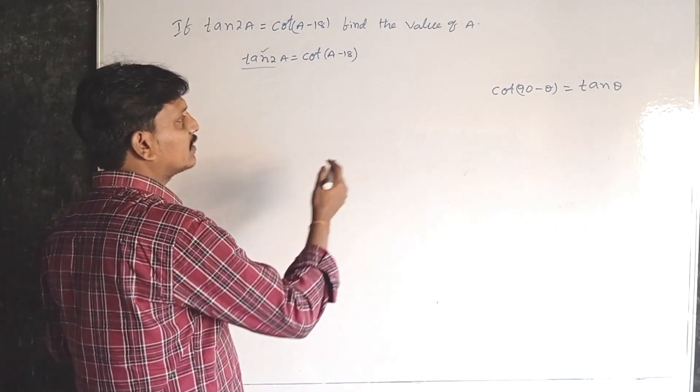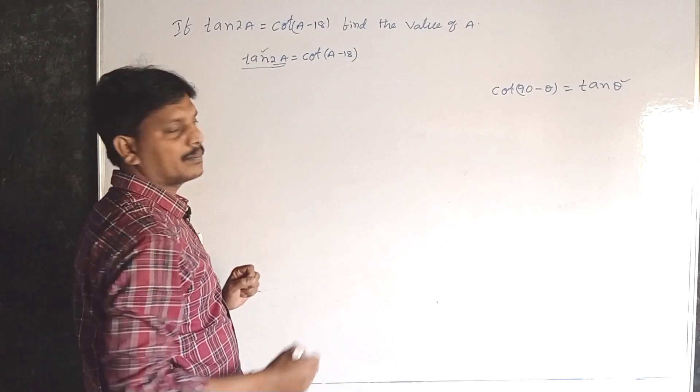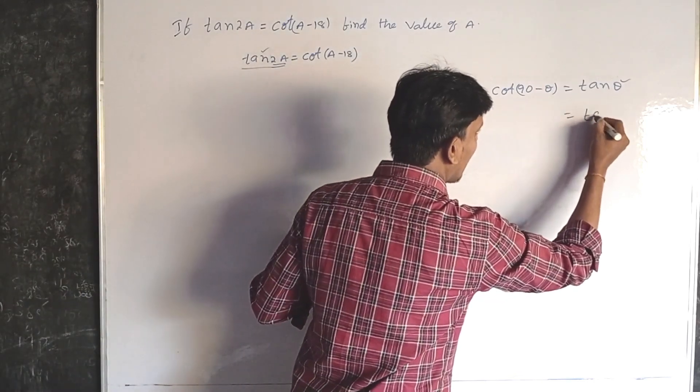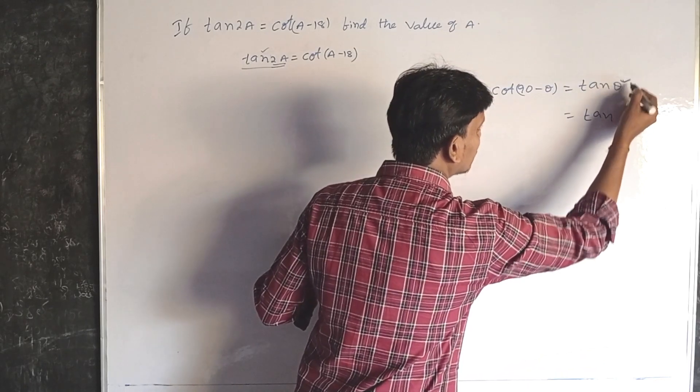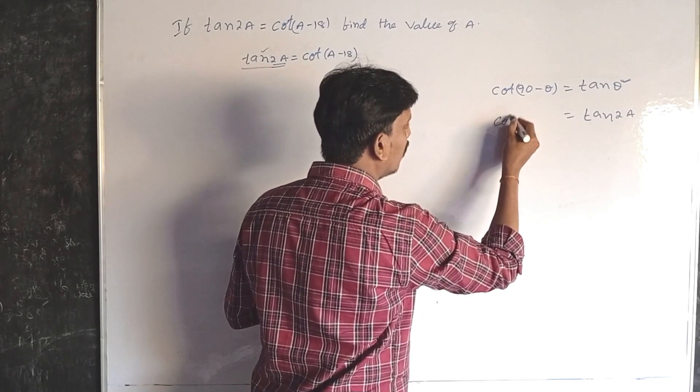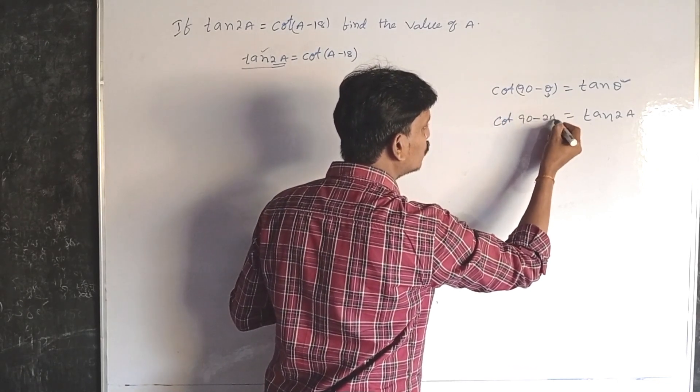In this sum, in the place of theta we have 2a. In place of theta, we write 2a. Same on the left side also - 90 minus theta, in place of theta we write 2a.